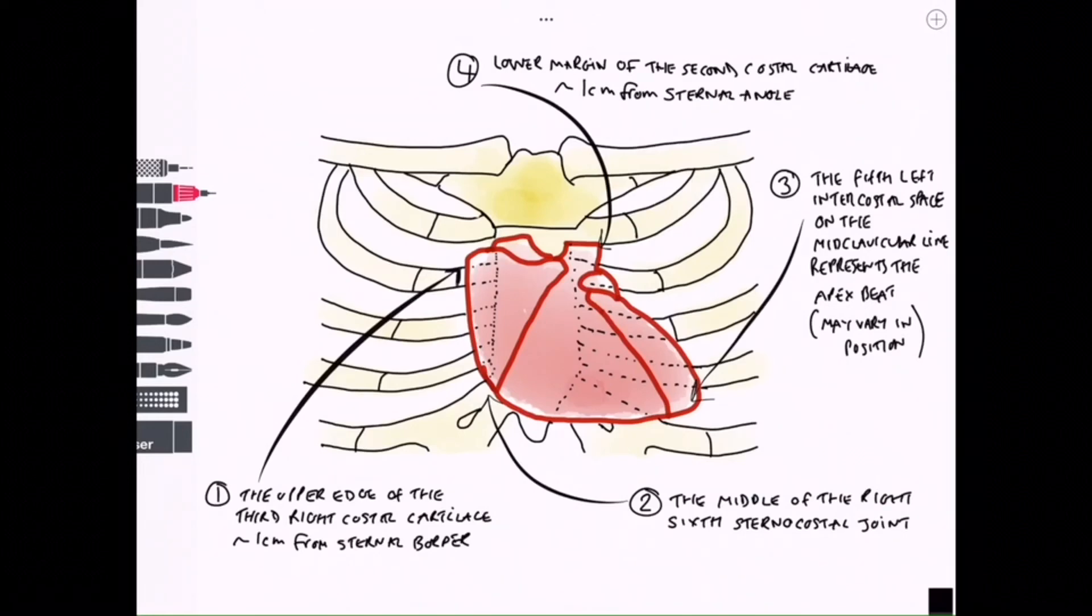So these four positions form the borders. We have the right border which is mainly right atrium. We have the lower border which is mainly right ventricle but a small part of the left ventricle at the apex. We have the lower four-fifths of the left border which is mainly left atrium, and the upper border is formed by both the left and the right atria.